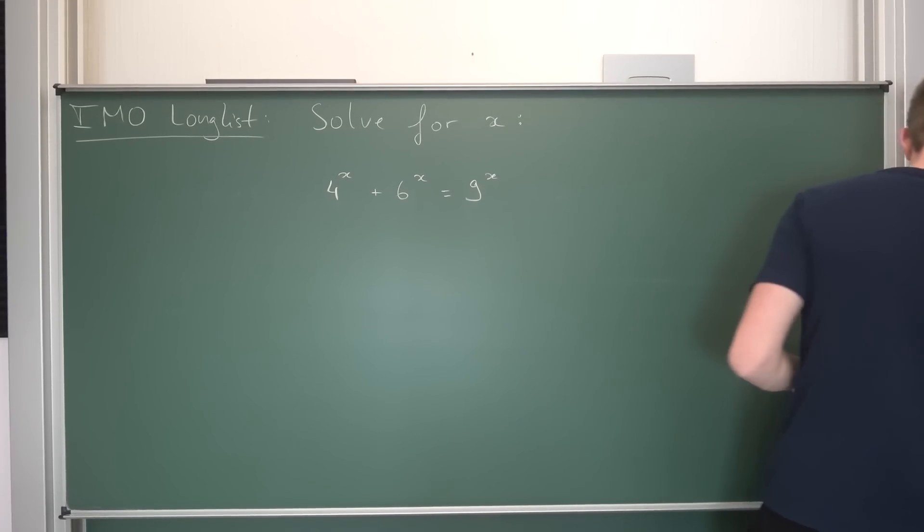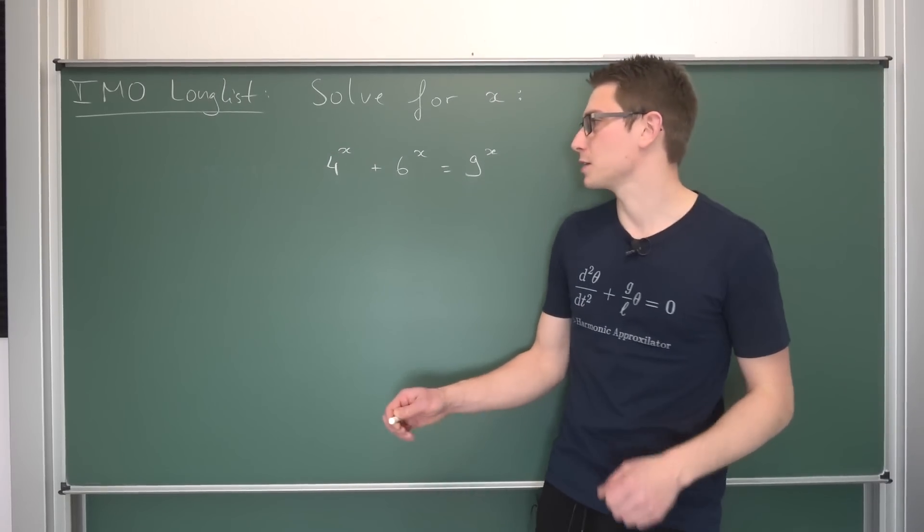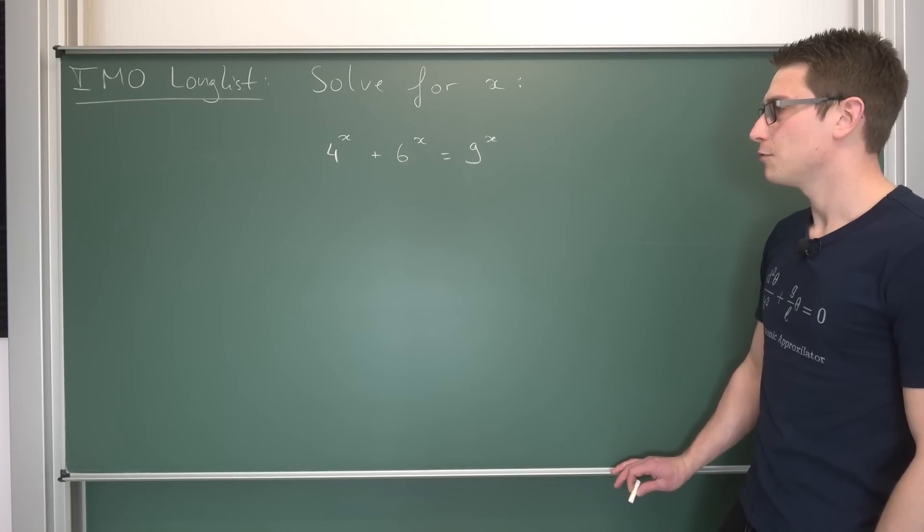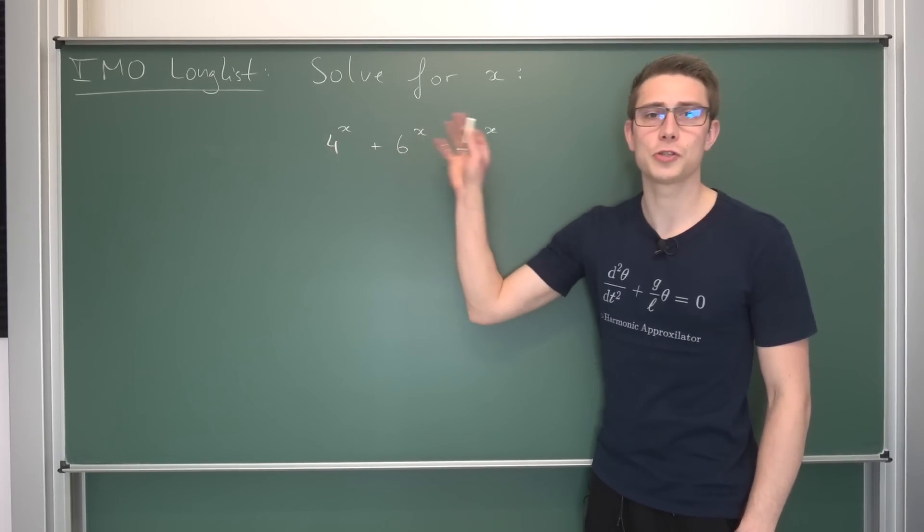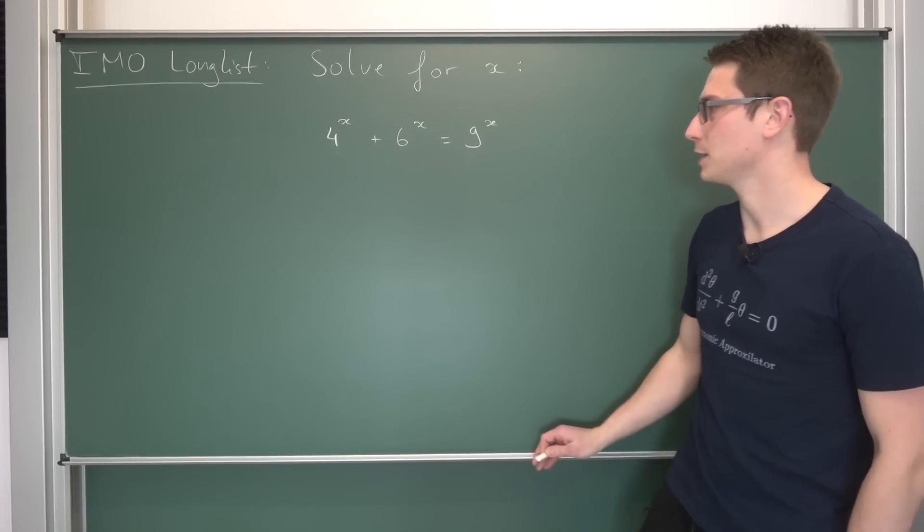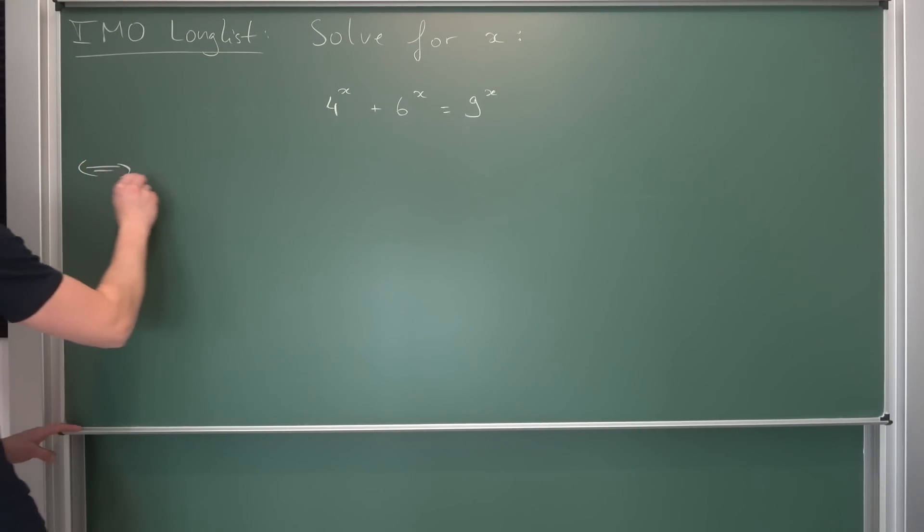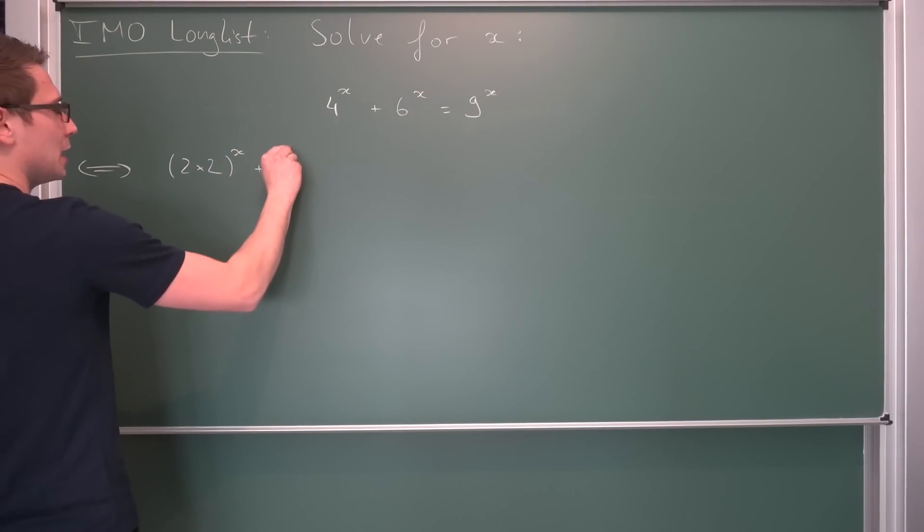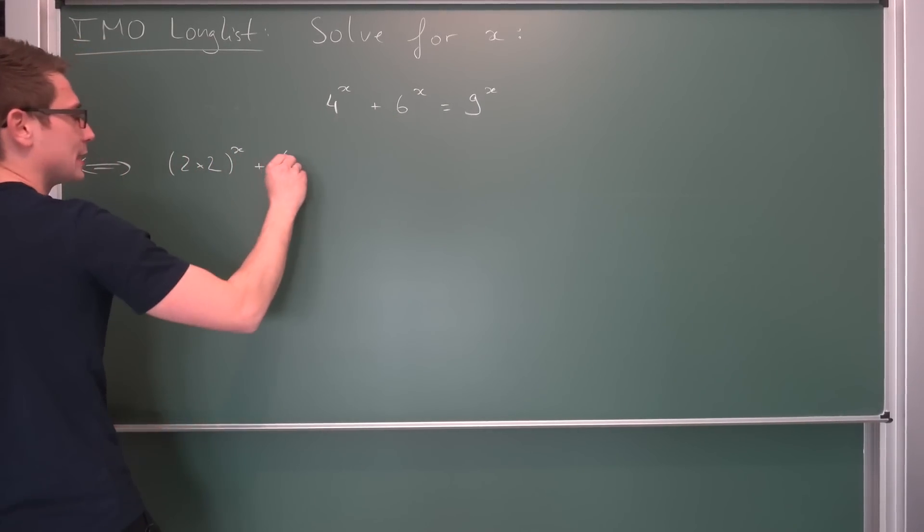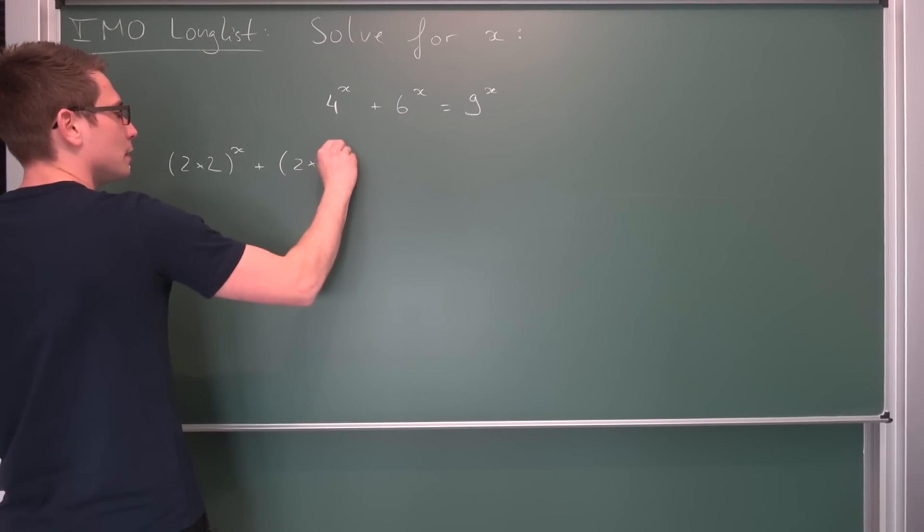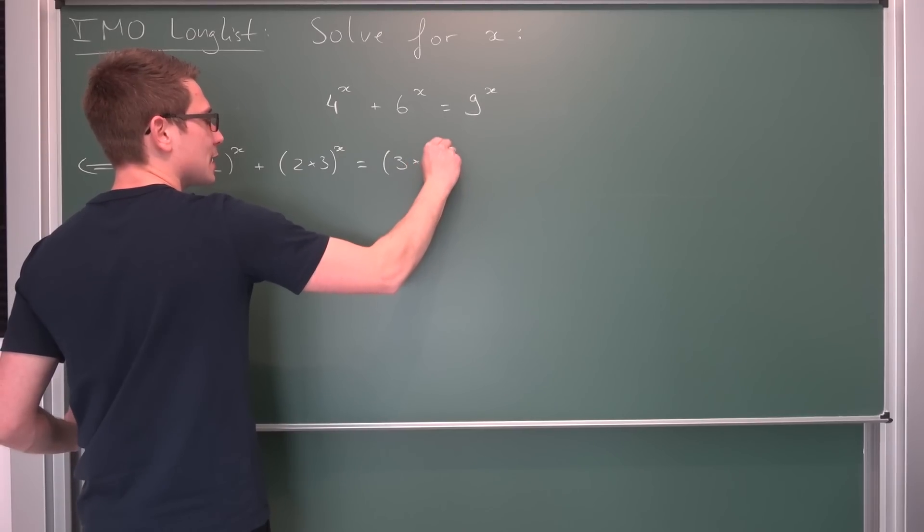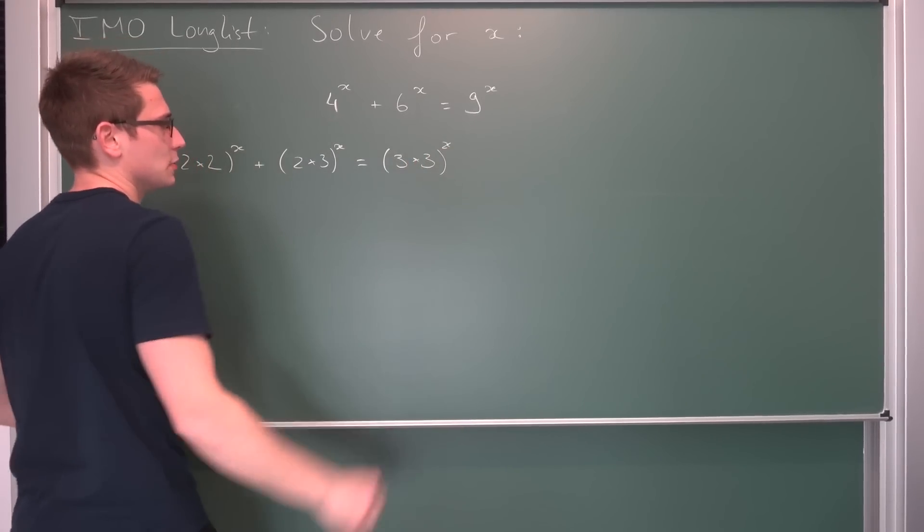Now, if I were to solve something like this, I would at first decompose it. Thing is, all of these have factors of 2 and 3 somehow scrambled in here. So let's write it out. So, 4 in its prime factorization is 2 times 2 to the x power, plus 6 in prime factorization is 2 times 3 to the x power is equal to 9 is perfect square, 3 times 3 and all of this to the x power.